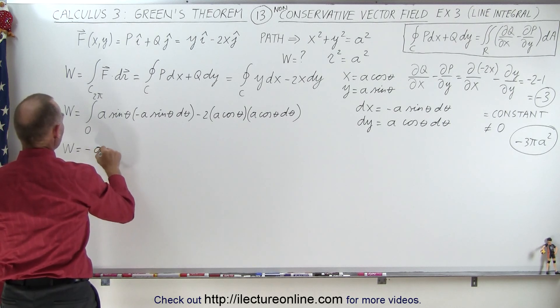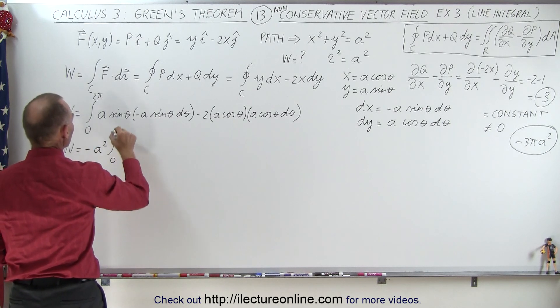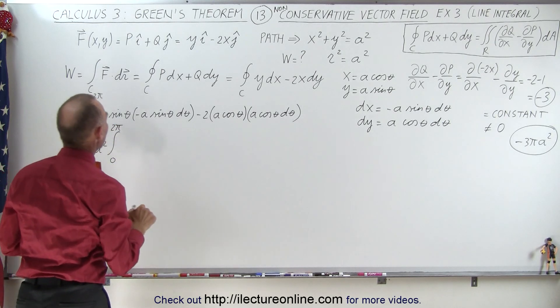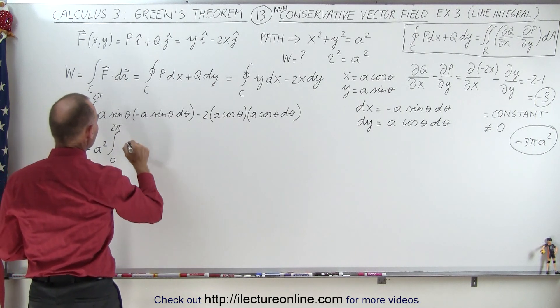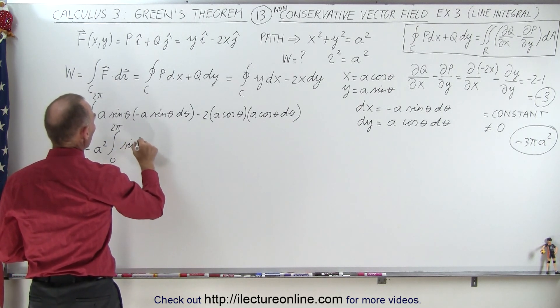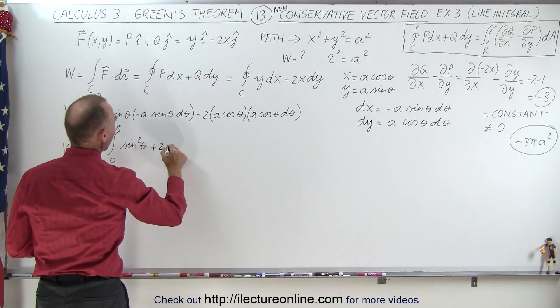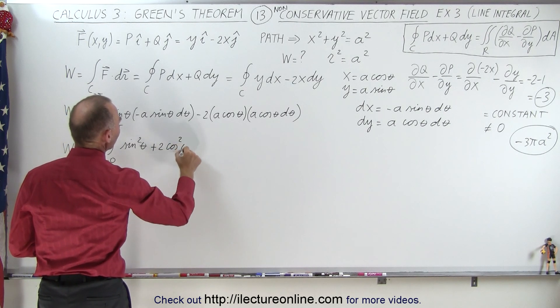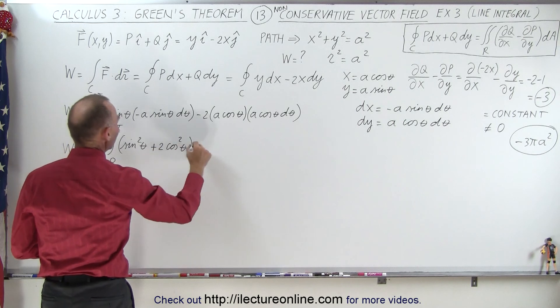So work done equals minus a square times the integral from 0 to 2 pi and let's see what we have left. So that leaves us with a sine square of theta plus 2 times the cosine square of theta all times d theta.